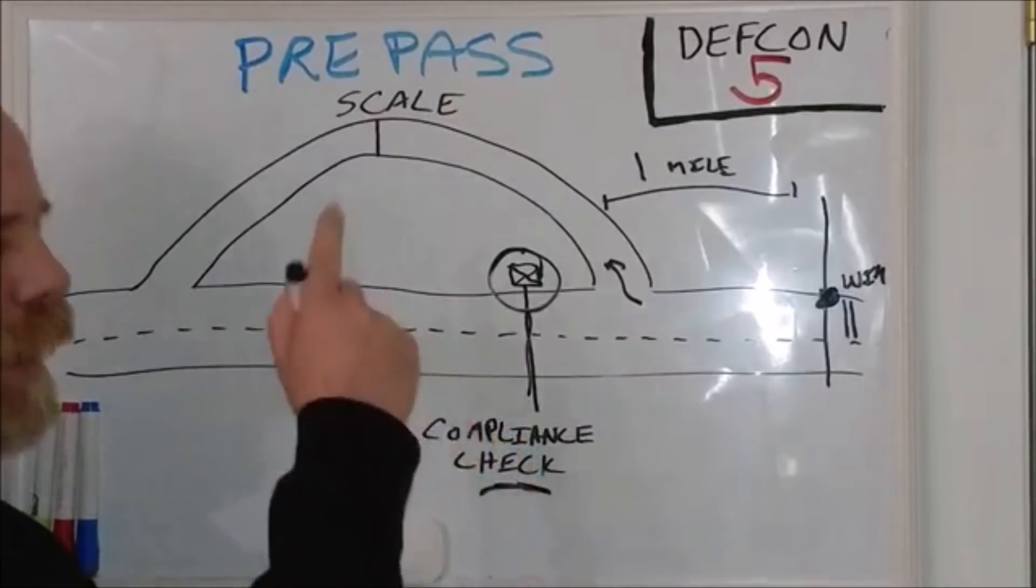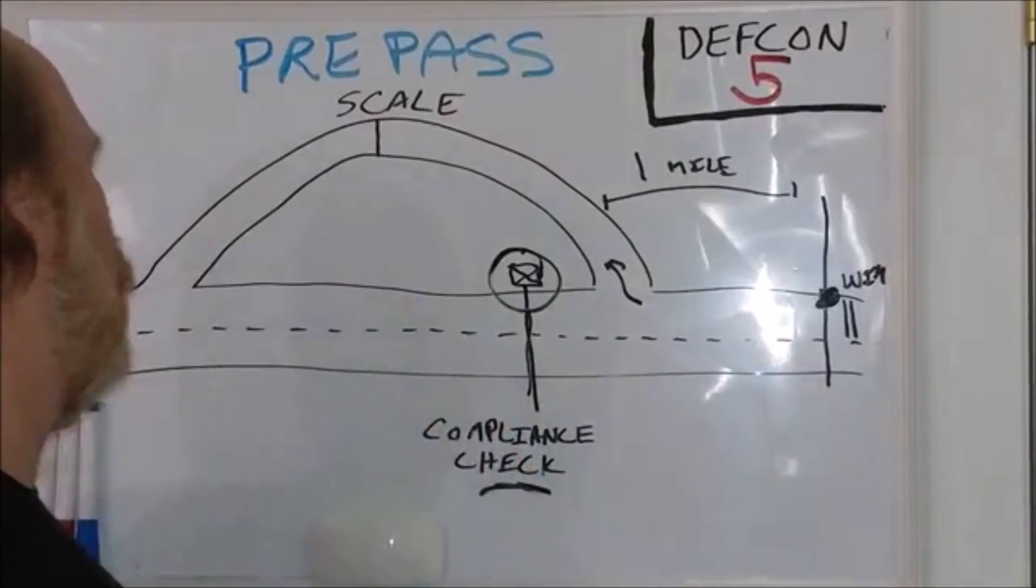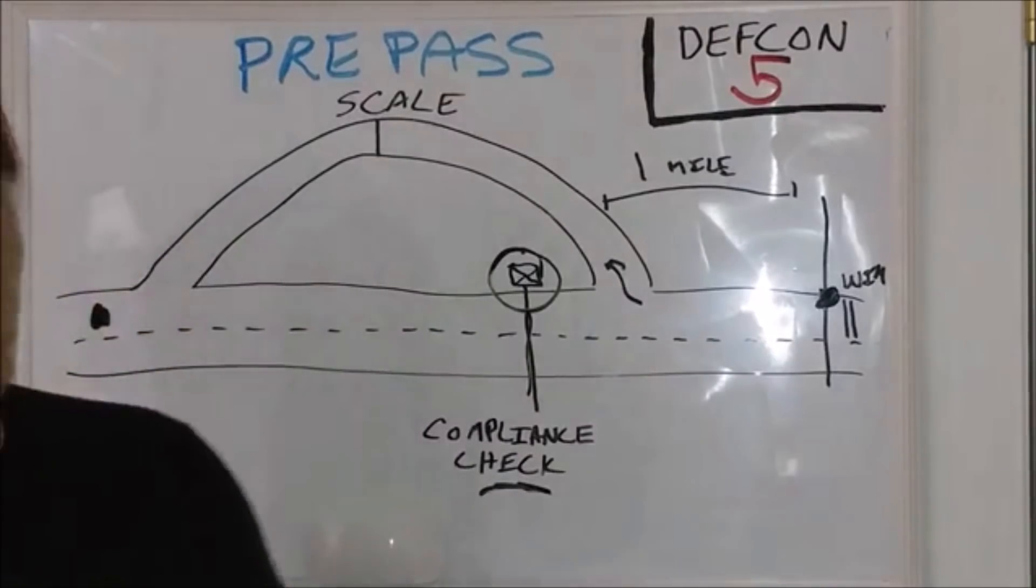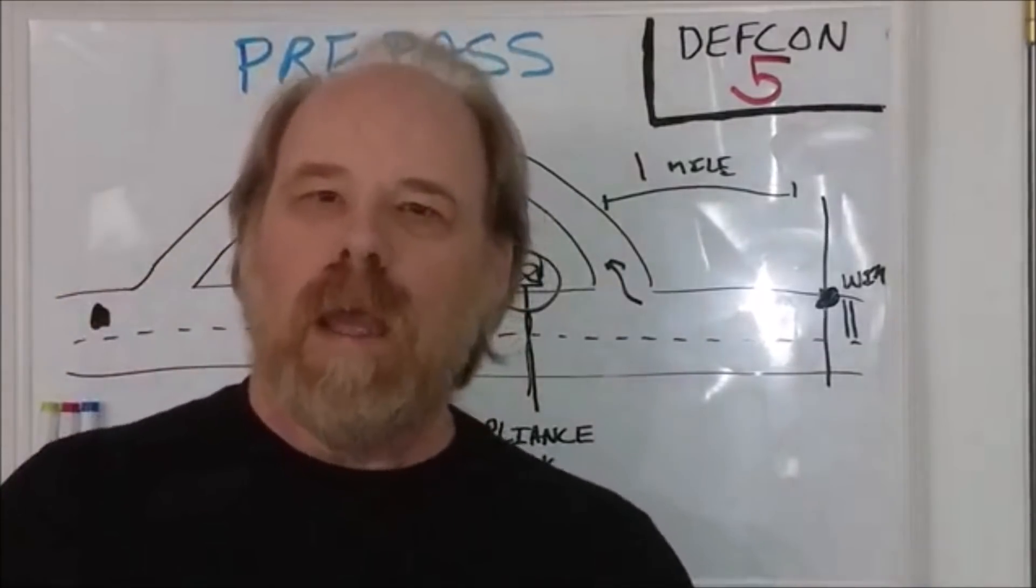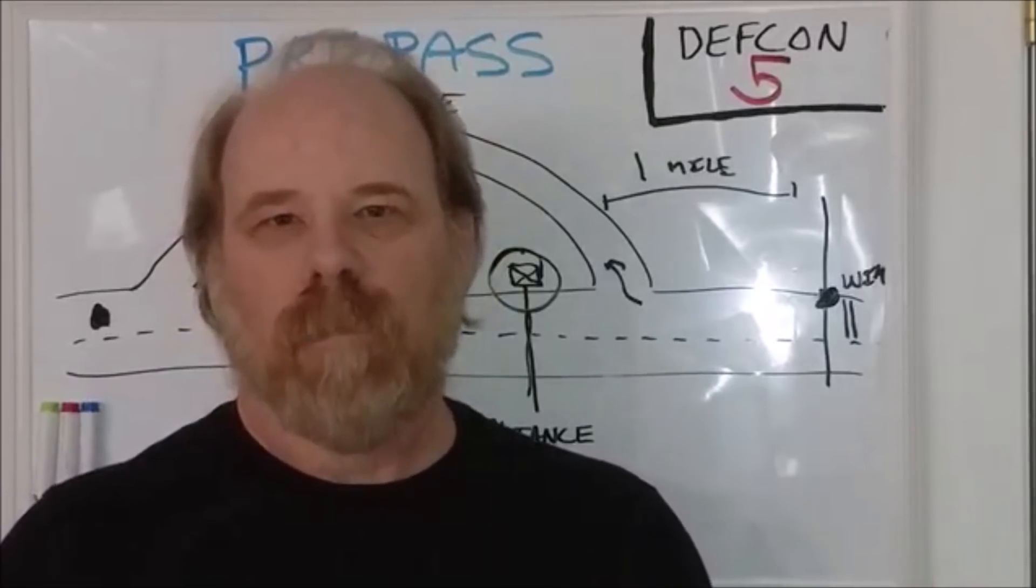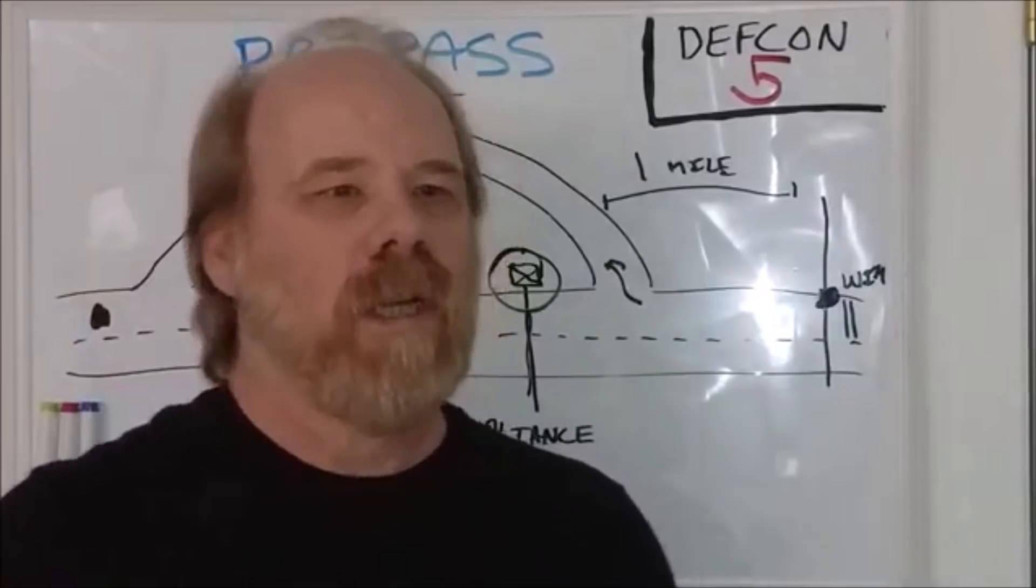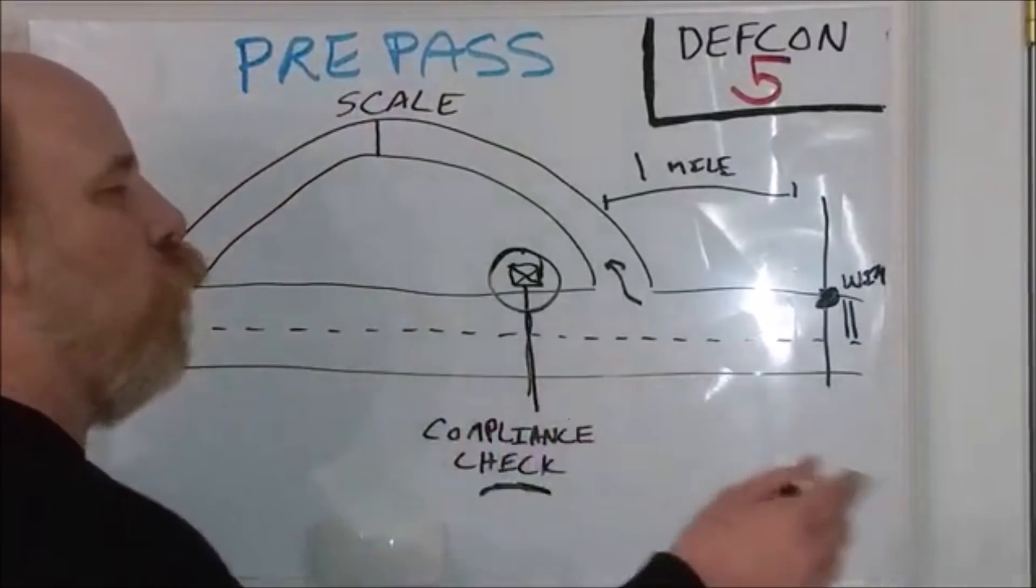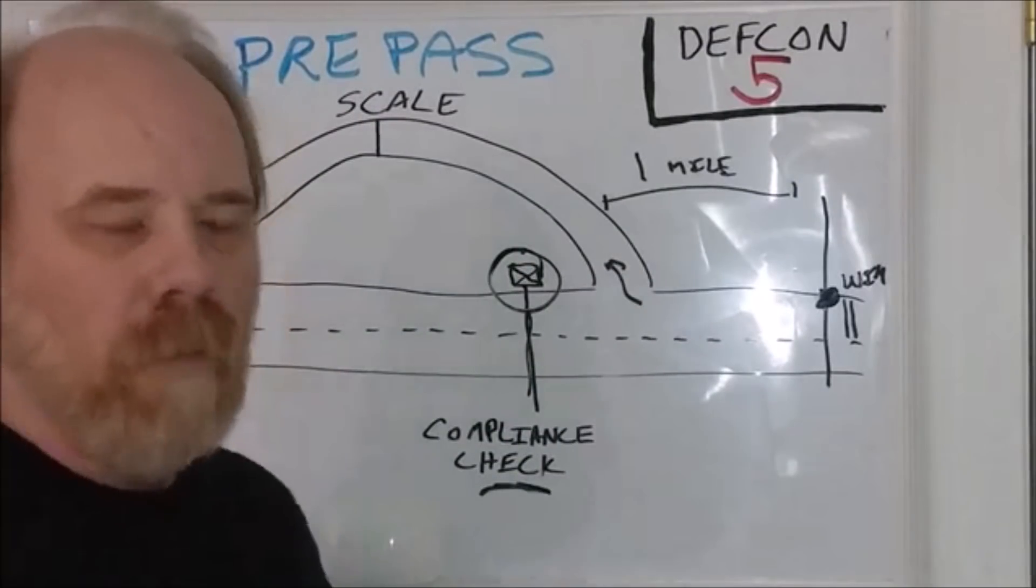That's why they have that, and so then somebody can talk to you about it, or that goes on your record of your company that trucks are getting the red light and they're still bypassing the scales. Now the scale master can set this however they want to set it. So they can set it for red so that all trucks go in, everybody gets a red.